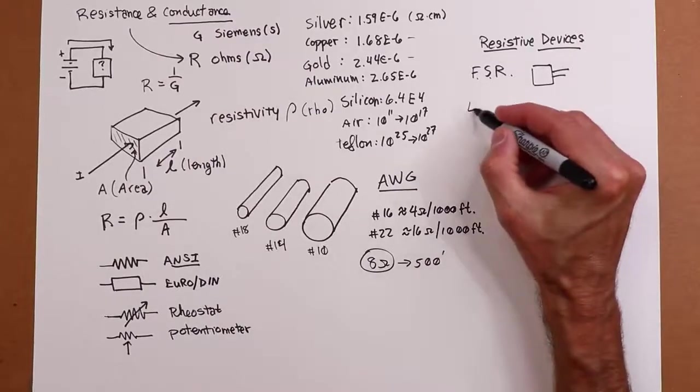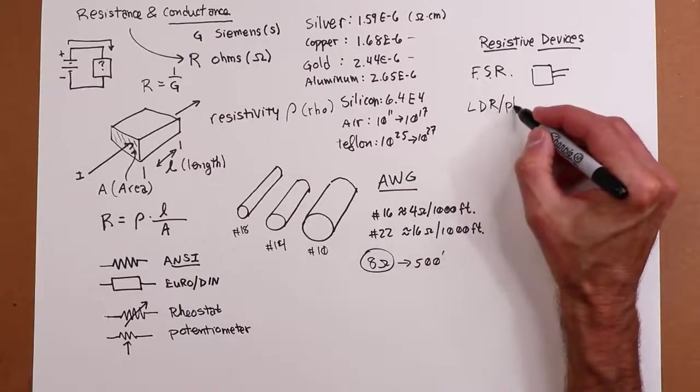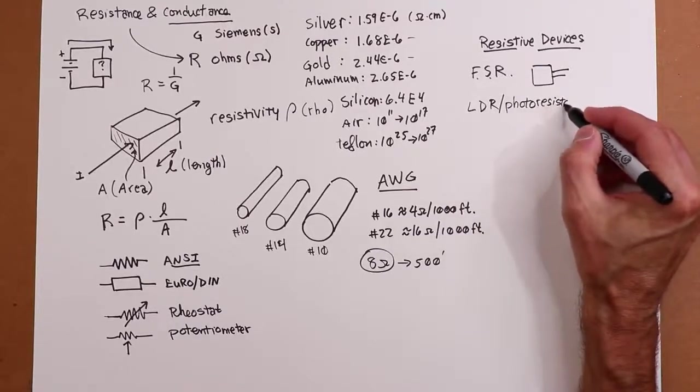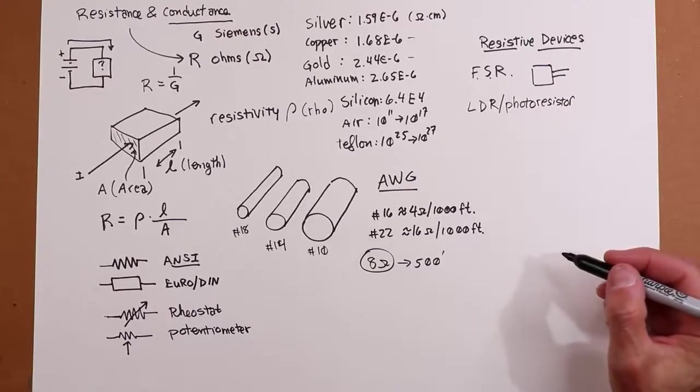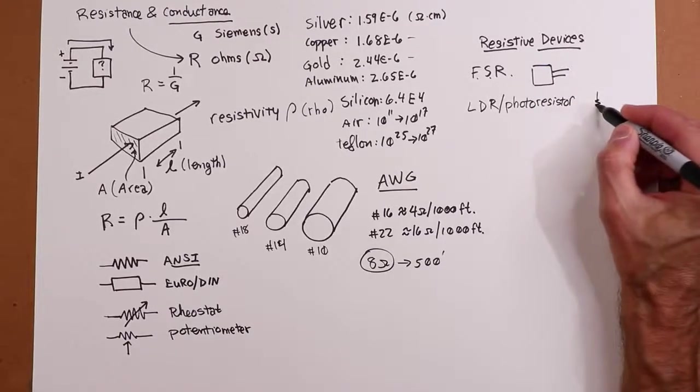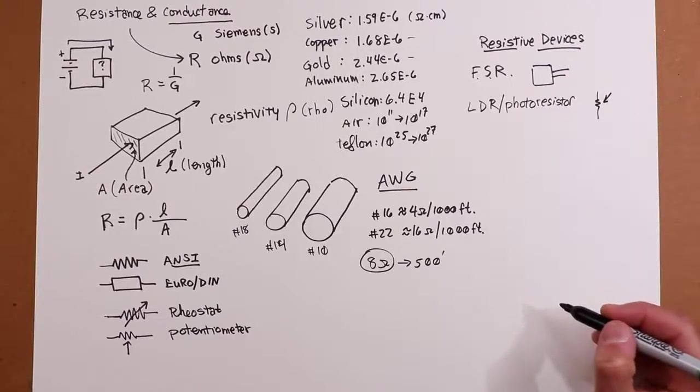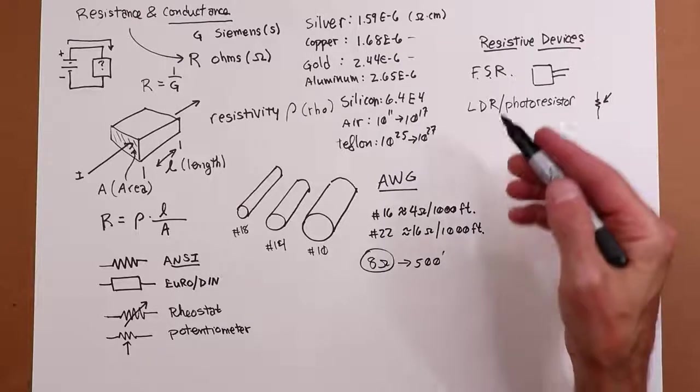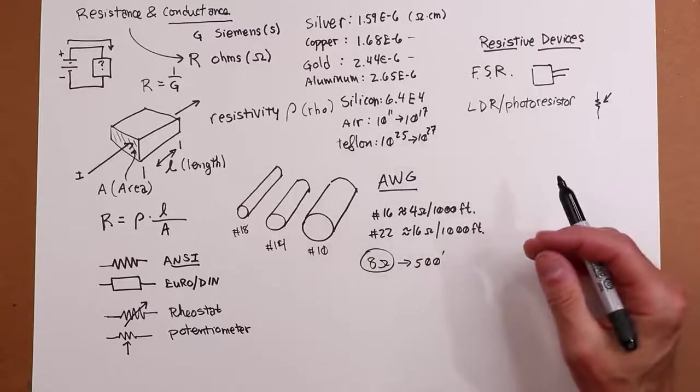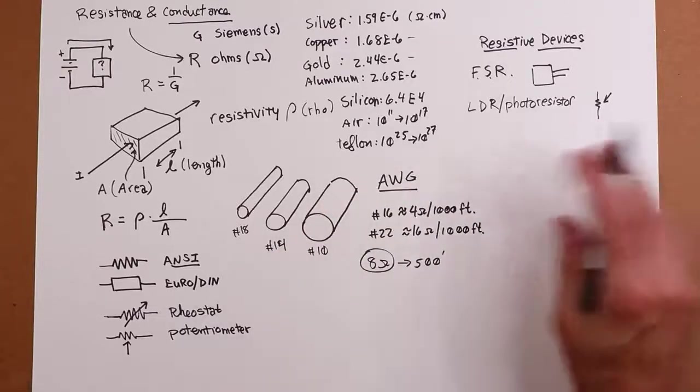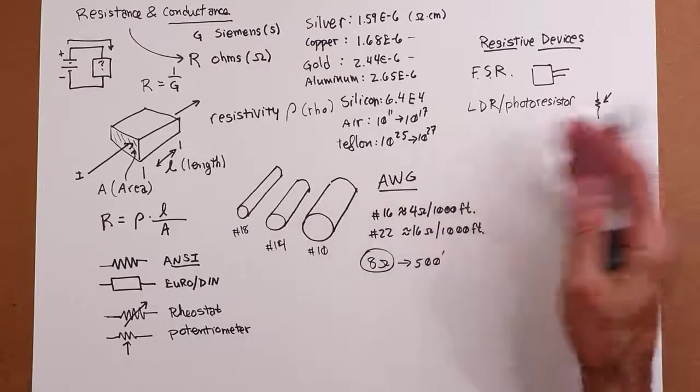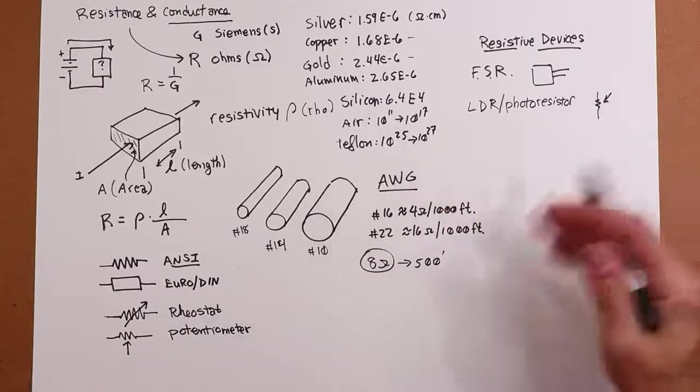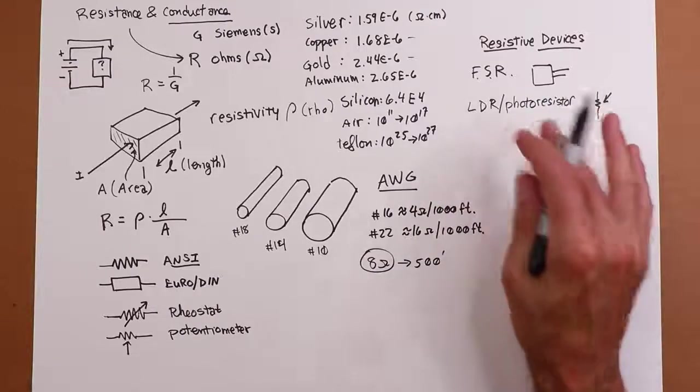Other things we have. Light-dependent resistor, also known as a photoresistor. So a photoresistor, very often they'll use a symbol like this. They'll just show like a little arrow going into it, which is sort of indicating light. Well, it's light-dependent. So the more light that hits it, the lower the resistance. So if it's a completely dark room, this thing might be a couple hundred k ohms. Outside at noon, sunny day, might be 50 ohms. All depends on the design, but it is light-sensitive.